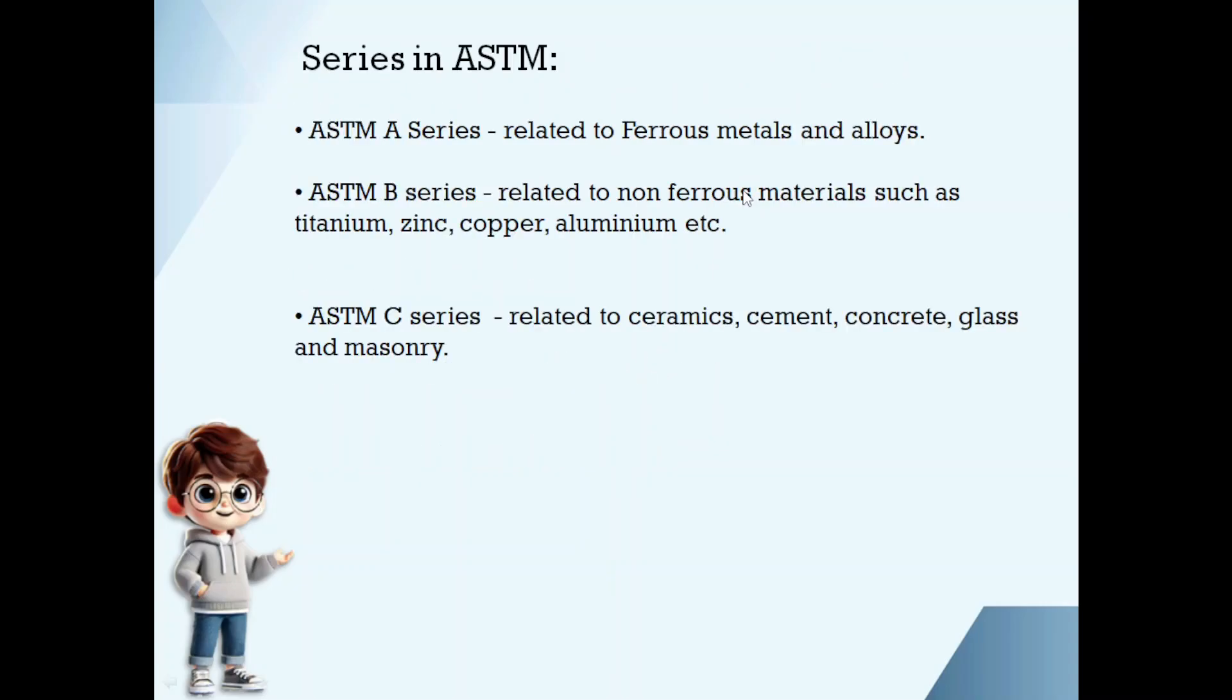There are some series in ASTM. All specifications in ASTM are categorized into different series. For example, ASTM A series consists of ferrous metal and alloys used in construction industry, fabrication, and engineering applications. B series consists of standards related to non-ferrous metals such as titanium, copper, zinc, and aluminum. C series consists of standards related to ceramic, cement, concrete, glass, and masonry. Our structural steel comes in ASTM A series.